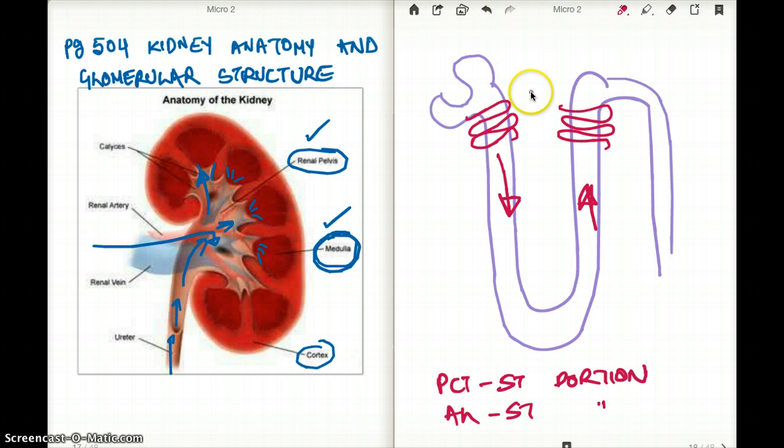You could ask about the juxtaglomerular apparatus, and the juxtaglomerular apparatus is kind of like here. The JG apparatus kind of knows what is going on in the DCT and at the beginning of the PCT.